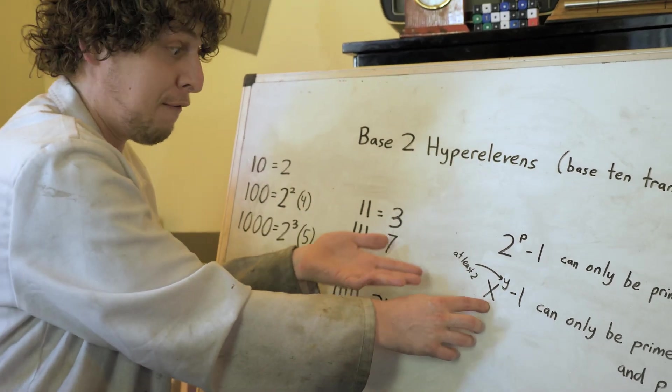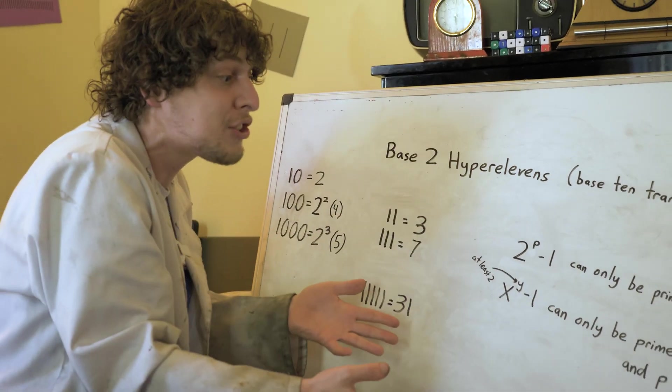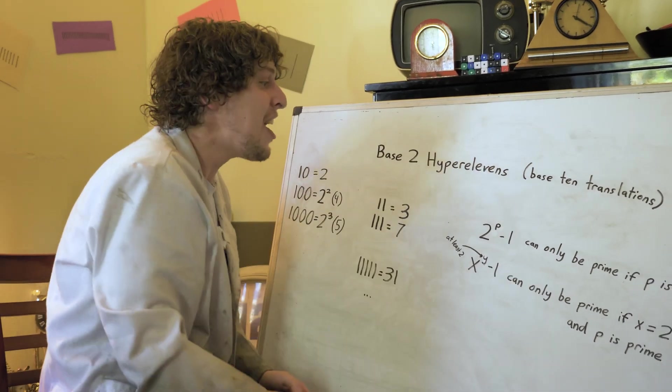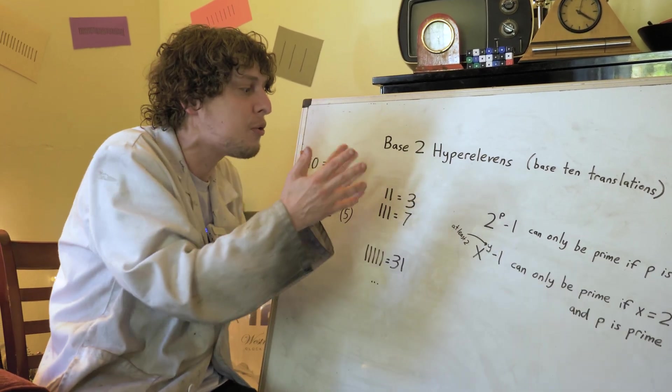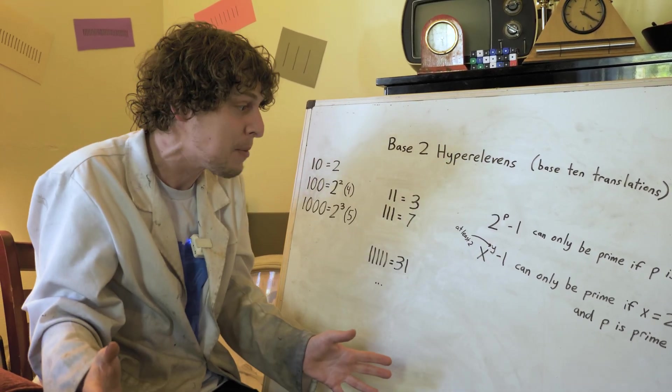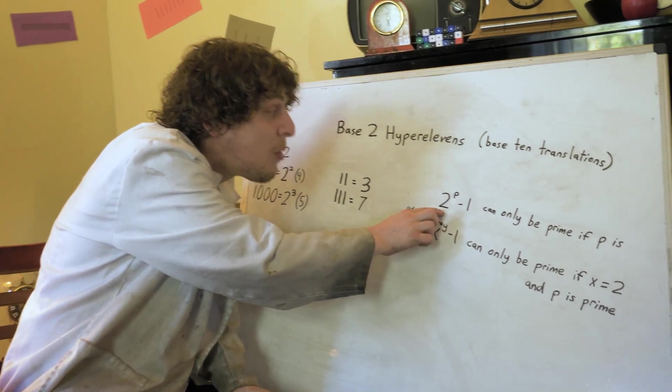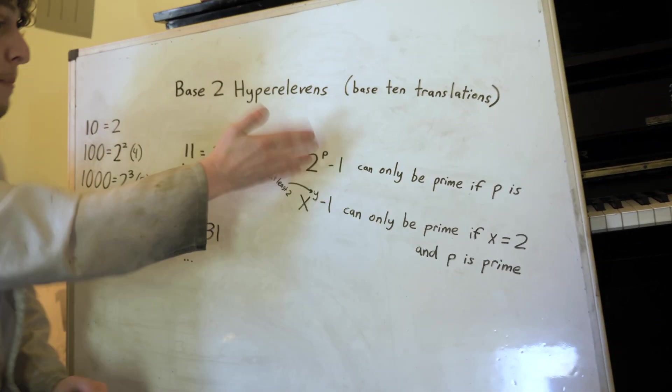No primes live right under 3 to a power of 2, 3, 4, etc., 5 to any power of at least 2, or anything. The only cases where x to a y of at least 2 minus 1 could be prime is if it's 2 to the power of a prime minus 1.